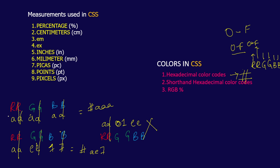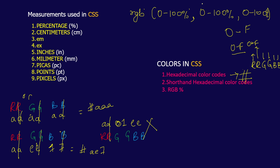Next you have RGB. Similar to hexadecimal digits from 0 to F, here you can specify colors in percentage or in values. In percentage, red is 0–100%, green is 0–100%, and blue is 0–100%. If you use values instead, each channel ranges from 0 to 255 — so 0 to 255 for red, 0 to 255 for green, and 0 to 255 for blue.